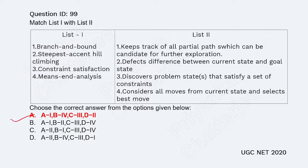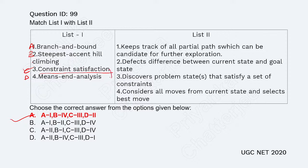For the constraint satisfaction problem question, option A is correct. Constraint satisfaction problems include games such as the N-queens problem, 8-queens problem, crossword puzzles, tic-tac-toe, and map coloring — where there are constraints and you must satisfy them. The definition matches: discovering the problem state that satisfies a set of constraints.